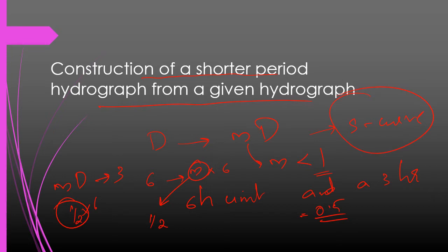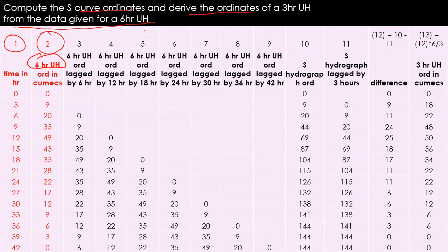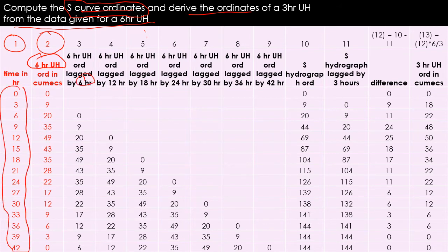Let us move on to the question. In this numerical problem, we have the 6-hour unit hydrograph ordinates given. We have to derive the S-Curve ordinates and then derive the ordinates of a 3-hour unit hydrograph from the given data. The red-colored columns of the table are given in the question, and the remaining columns we will be deriving. First, we have to construct the S-Curve ordinates by lagging the given hydrograph with its own unit duration until it reaches the last row of the data, which is 42.